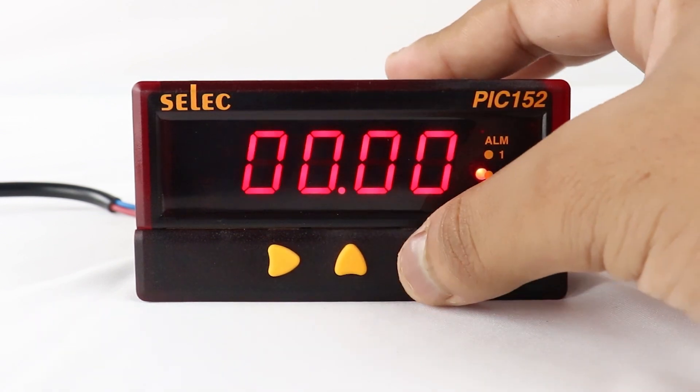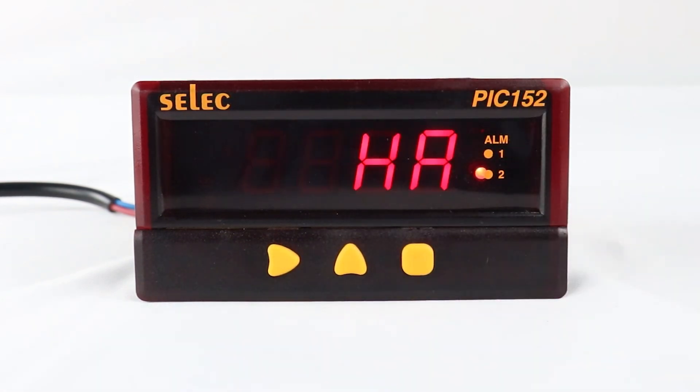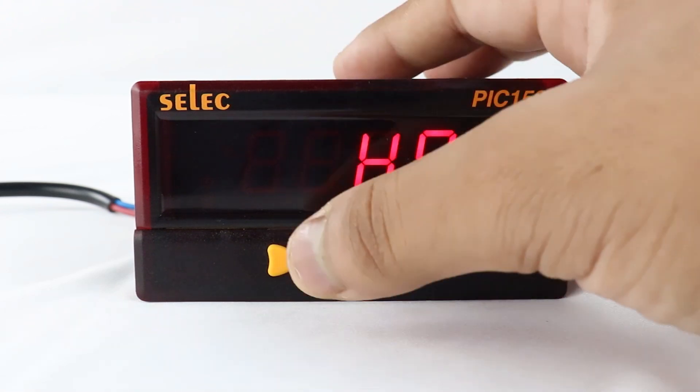By using square key, user can select alarm mode. It contains various alarm modes, such as high alarm, it turns on when process value rises above a preset value.